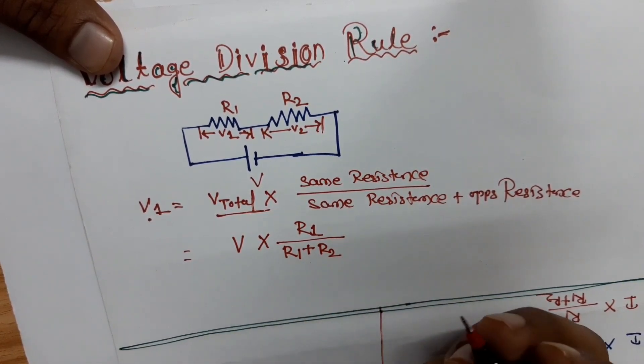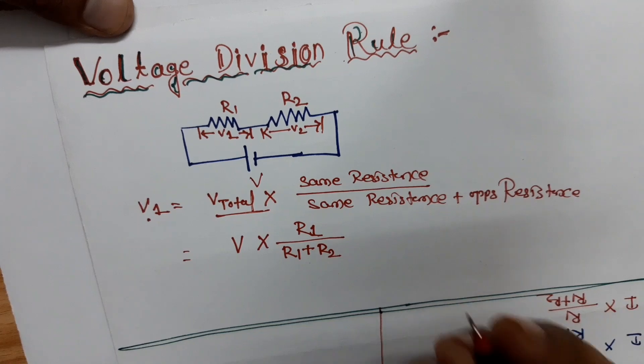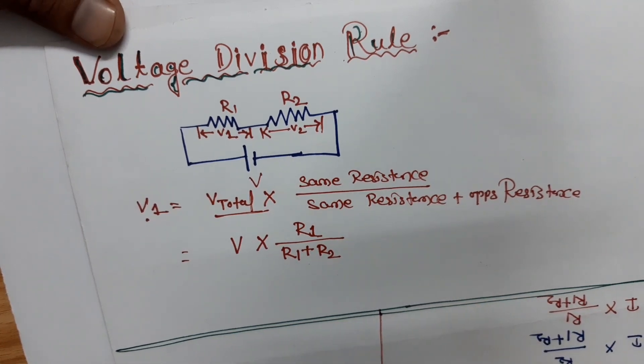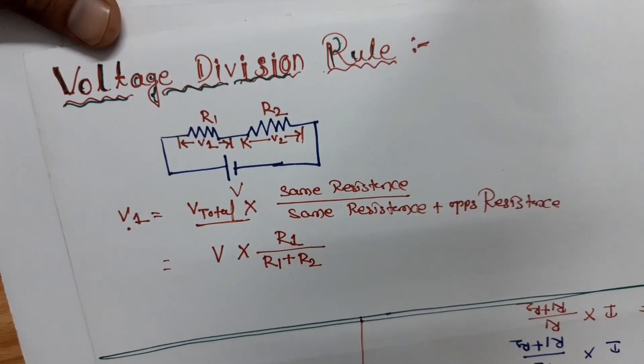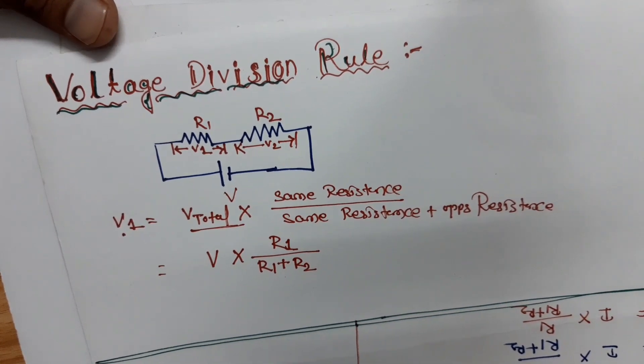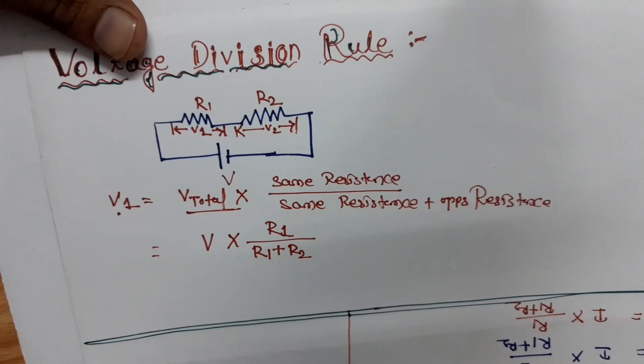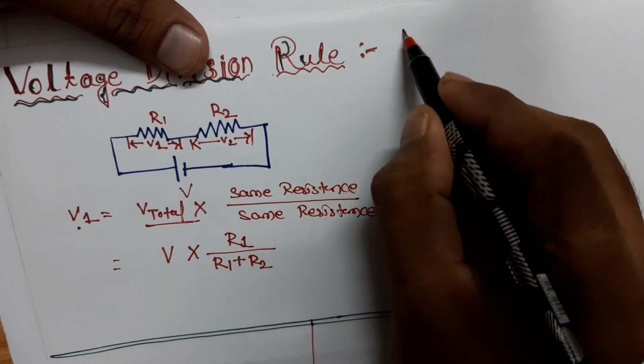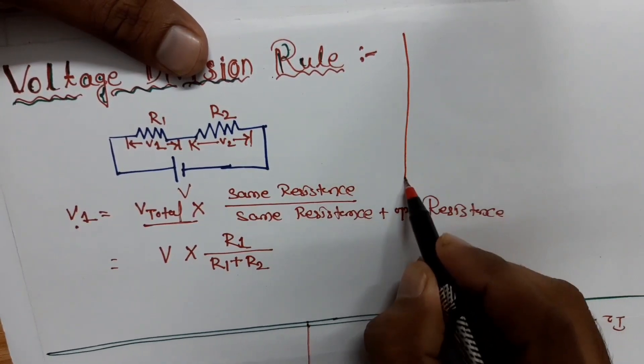Now let's try with three resistors. If three resistors are connected in series, then what happens? Let's try to extend the voltage division rule to three resistors.